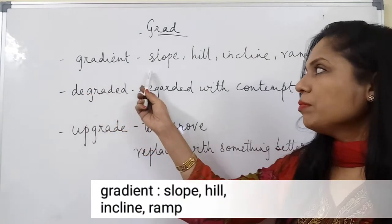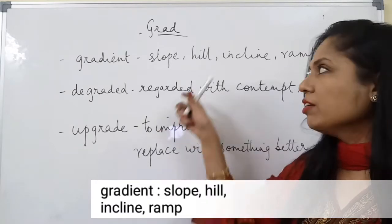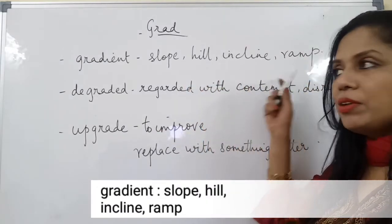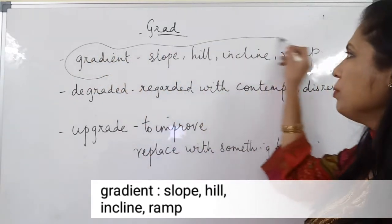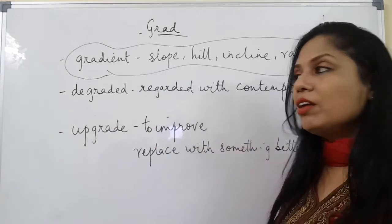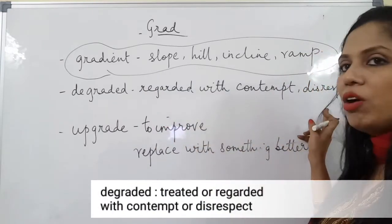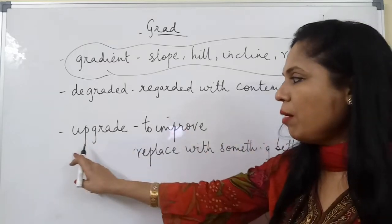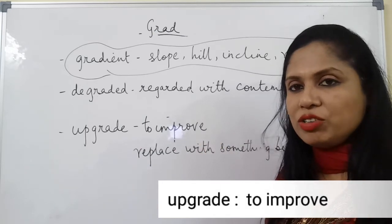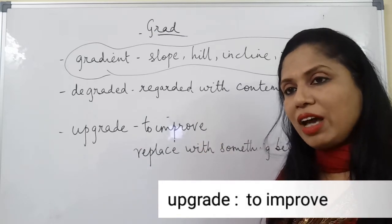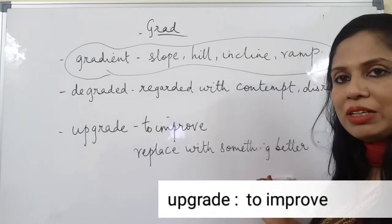'Gradient' means a slope or something which is inclined, like a hill — an incline or a ramp. All these words are synonymous. 'Degraded' means regarded with contempt or disrespect. 'Upgrade' is to improve with respect to technology or gadgets, or to replace with something better.